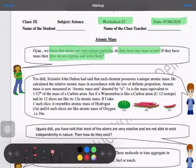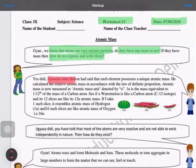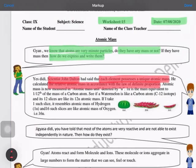Yes, there was a scientist known as John Dalton. He said that each element possesses a unique atomic mass, and he calculated the relative atomic mass in accordance with the law of definite proportion. How is this atomic mass measured?